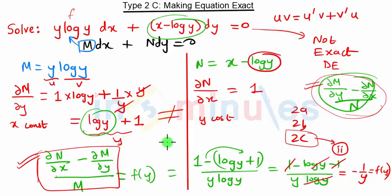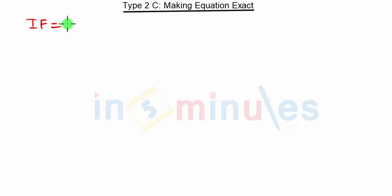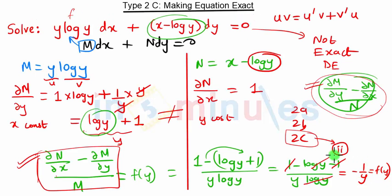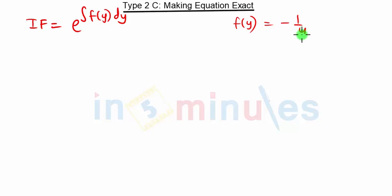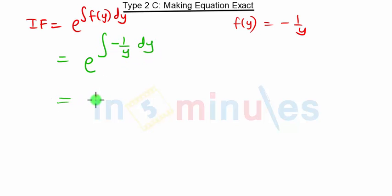Since this is a function f(y), the integrating factor is e raised to the integration of f(y) dy. From our previous calculation, f(y) = −1/y. So the integrating factor is e raised to the integral of −1/y dy, which equals e raised to minus the integral of 1/y.